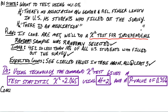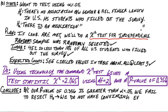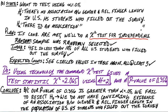For the conclude step, because our p-value of 0.356 is greater than our alpha level of 0.05, we fail to reject the null hypothesis. In context, that means we couldn't find convincing evidence of an association between gender and relative finger length. Our p-value was high — bigger than alpha — so we failed to reject the null and couldn't find an association between gender and relative finger length in this population of U.S. high school students who filled out the survey.